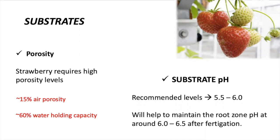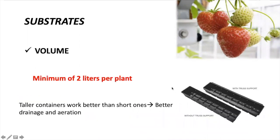pH is also important. Strawberry leaves tend to develop iron deficiency under high pH levels. We need to find a substrate that helps us maintain the root zone with a pH of 6.0 to 6.5 after irrigation. Volume is also important. Strawberry grows better in a hydroponic system with substrate and drip irrigation. We recommend using at least two liters of substrate per plant and using tall containers to promote good drainage, just like the strawberry crops from Beacon Farm.